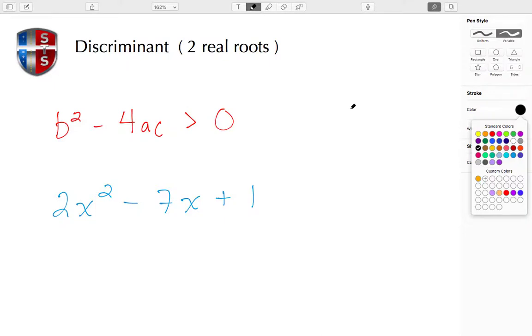Welcome back to Spelling Math Tutorials. In today's tutorial, we're going to learn about the discriminant. In this example, the discriminant is going to indicate two real roots, so the number of roots is two and they will be real.